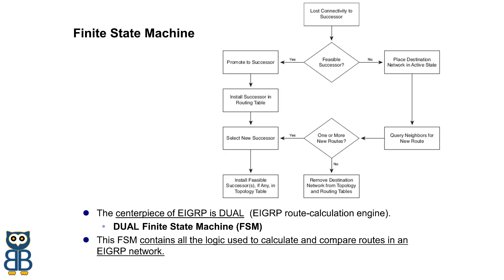The Dual Finite State Machine, or FSM, is EIGRP's route calculation engine. This FSM contains logic to calculate and compare routes in an EIGRP network. It is an abstract machine, not a mechanical device with moving parts. It classifies the different states of possibilities that something can go through, what proceedings cause those states, and what proceedings result from those states.